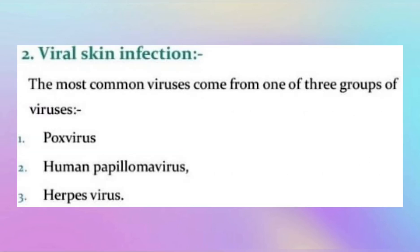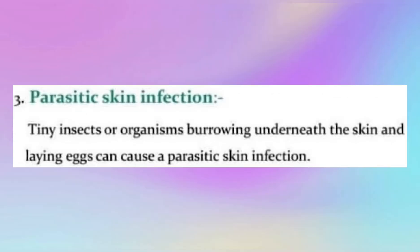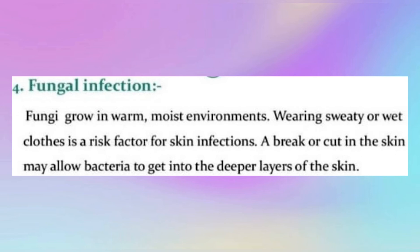For viral skin infection, the most common viruses come from one of these groups: pox virus, human papilloma virus, and herpes virus. For parasitic skin infection, tiny insects or organisms burrowing underneath the skin and laying eggs can cause a parasitic skin infection. For fungal infection, fungi grow in warm, moist environments. Wearing sweaty or wet clothes is a risk factor for skin infections, and a break or cut in the skin may allow bacteria to get into the deeper layers of the skin.